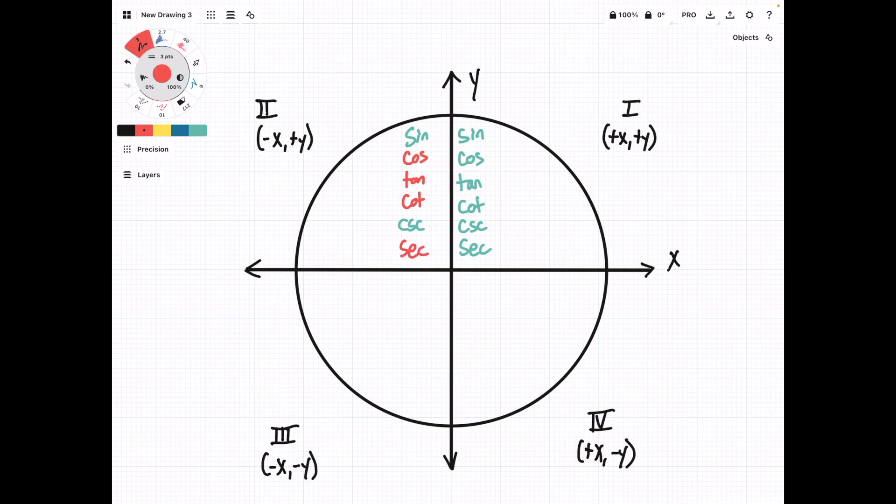In quadrant 3, we have a negative sine, a negative cosine, a positive tangent, positive cotangent, negative cosecant, and a negative secant.